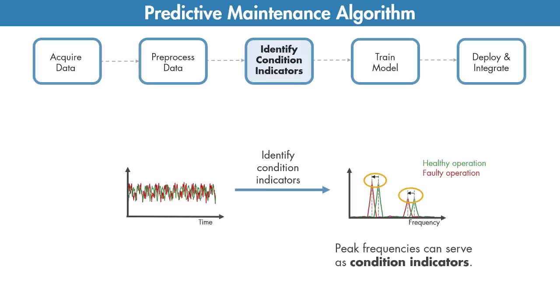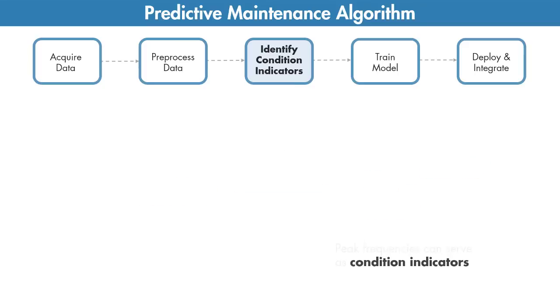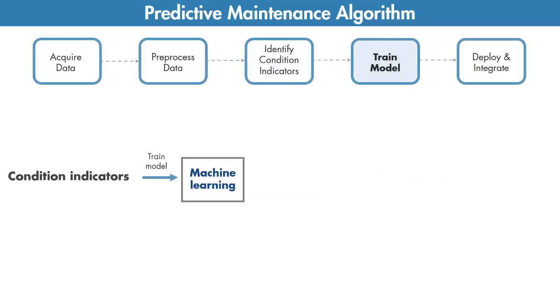So far, you extracted some features from your data that help you understand healthy and faulty operation of the pump. But at this stage, you're still not sure what part needs repair or how much time there is until failure. In the next step, you can use the extracted features to train machine learning models to do the following.